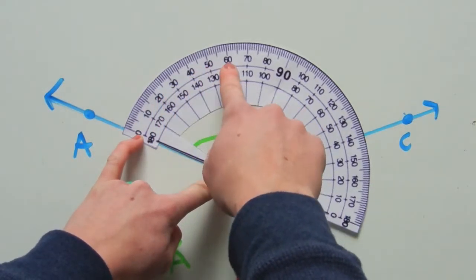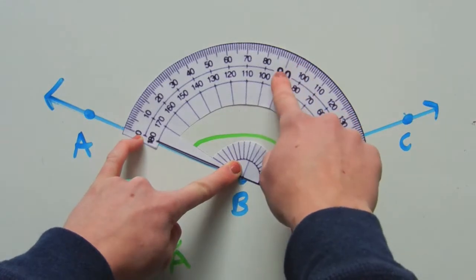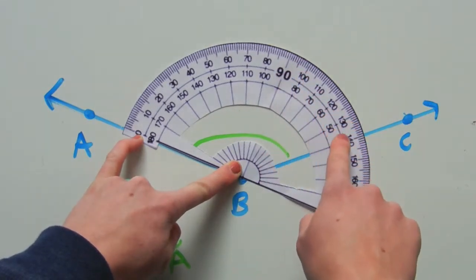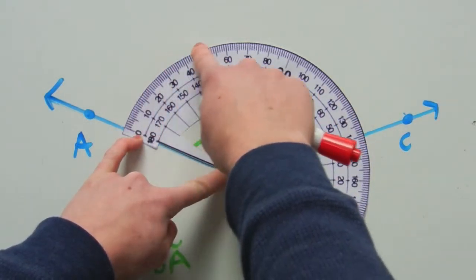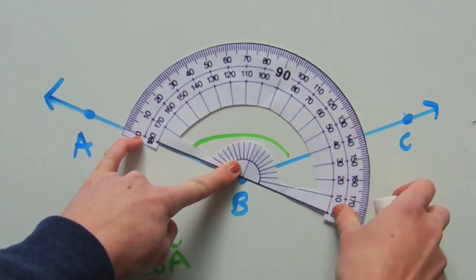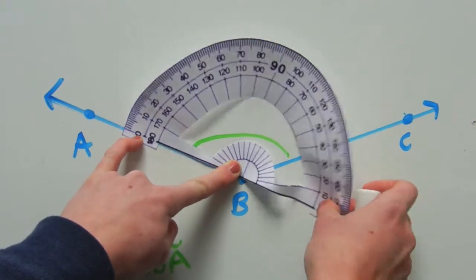40, 50, 60, and so on, all the way past 90, and it lands exactly on 140. So the measure of the angle ABC is equal to 140 degrees.